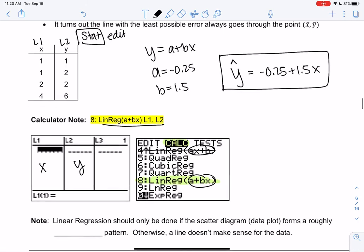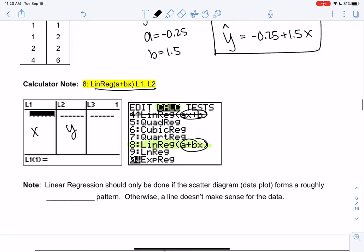So linear regression, before we keep going, should only be done if the data, the scattergram, is at least roughly linear. Something like this, where it's kind of a line versus just points all over the place. This is not roughly linear. So it has to be kind of a line. Otherwise, we shouldn't even bother doing linear regression.